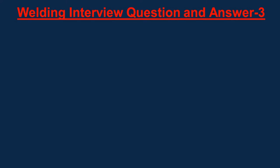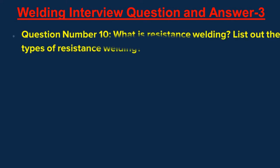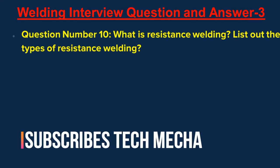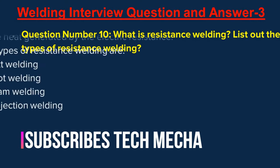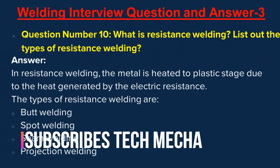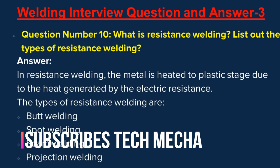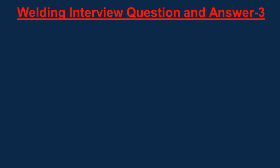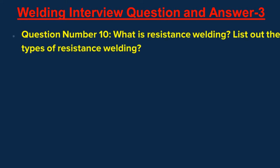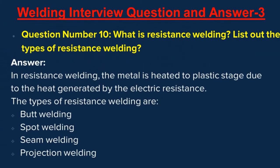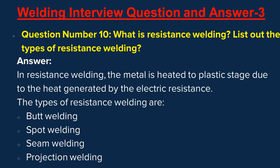Question number ten: What is resistance welding? List out the types of resistance welding. Answer: In resistance welding, the metal is heated to a plastic stage due to heat generated by electric resistance. The types of resistance welding are butt welding, spot welding, seam welding, and projection welding.